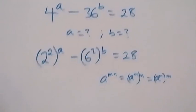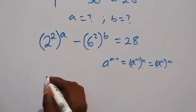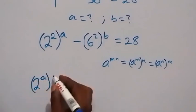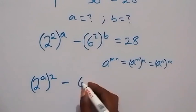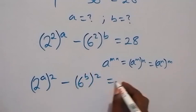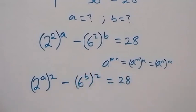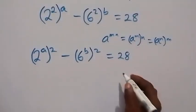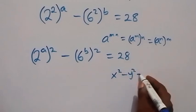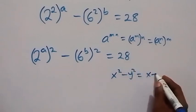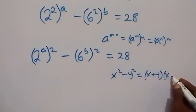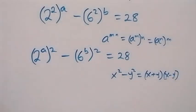So here we can have 2 raised to the power a, then raised to the power 2, minus 6 raised to the power b, then raised to the power 2, equals 28. And from here, when we have x squared minus y squared, we can write this as x plus y times x minus y — the difference of two squares.